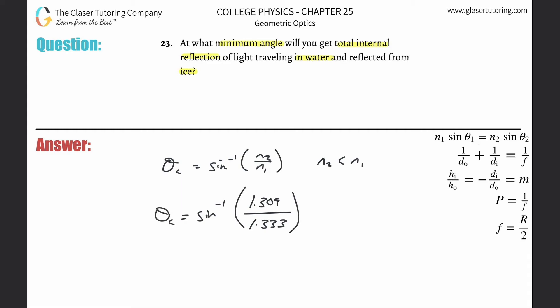And this is all it is then. Simple. Easy as pi. So inverse sine of 1.309 divided by 1.333. 79.1. There it is.